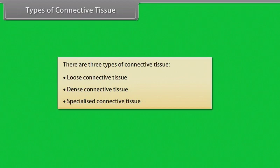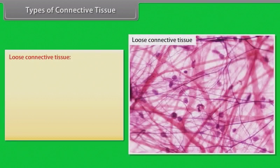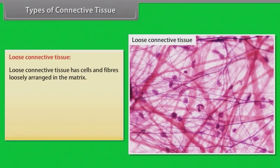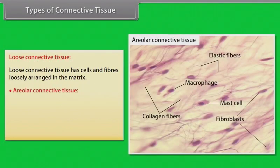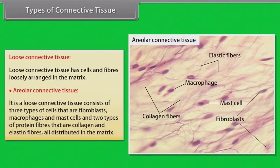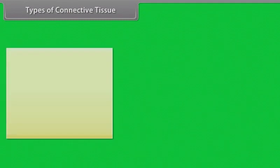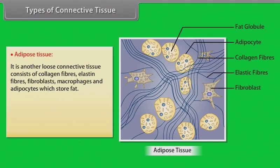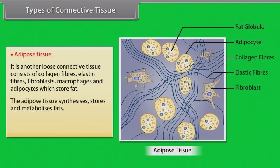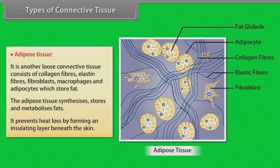There are three types of connective tissue: loose connective tissue, dense connective tissue, and specialized connective tissue. Loose connective tissue has cells and fibers loosely arranged in the matrix. Areolar connective tissue consists of three types of cells — fibroblasts, macrophages, and mast cells — and two types of protein fibers, collagen and elastin, distributed in the matrix. Adipose tissue is another loose connective tissue consisting of collagen fibers, elastin fibers, fibroblasts, macrophages, and adipocytes which store fat. The adipose tissue synthesizes, stores, and metabolizes fats, and prevents heat loss by forming an insulating layer beneath the skin.